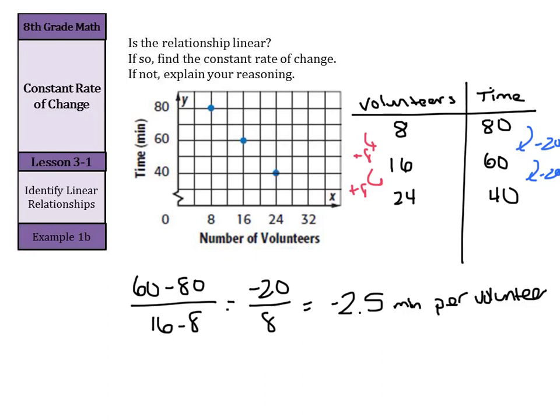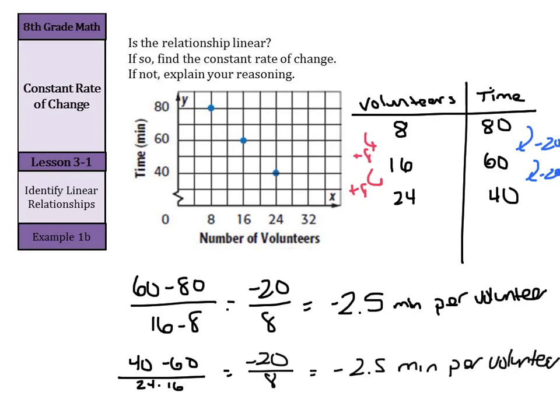Let's compare that to the other one. 40 minus 60 over 24 minus 16. Well, this too simplifies down to negative 20 over 8, which once more is negative 2.5 minutes per volunteer. It looks like we have a constant rate of change here since these numbers are the same. So yes. And our reason why is the negative 2.5 minutes per volunteer is a constant rate of change.